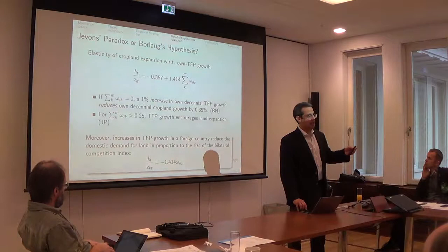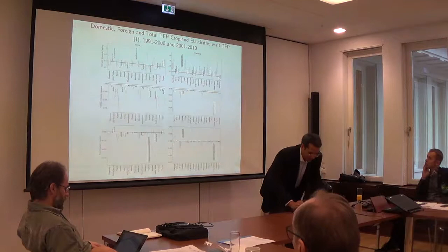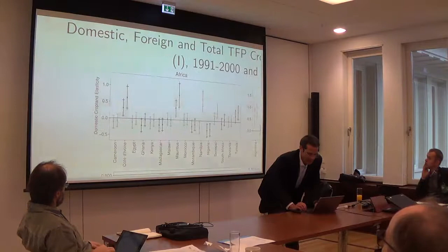This allows me to estimate foreign cropland elasticities to TFP growth. Needless to say, all this is based on OLS beta parameters, so the delta method, or your preferred way of eliciting standard errors, helps to get these bars that I have here.